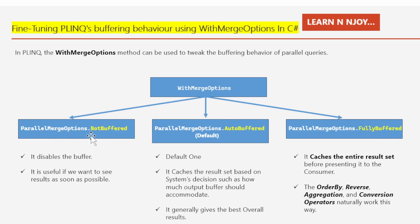NotBuffered disables buffering and is useful when you want to see results as soon as possible. AutoBuffered is the default — it sizes the result buffer based on system decisions to give the best overall performance, which is why Microsoft chose it as the default. FullyBuffered buffers the entire result set before presenting it to the consumer; OrderBy, reverse, aggregation, and conversion operators naturally work in this fashion.